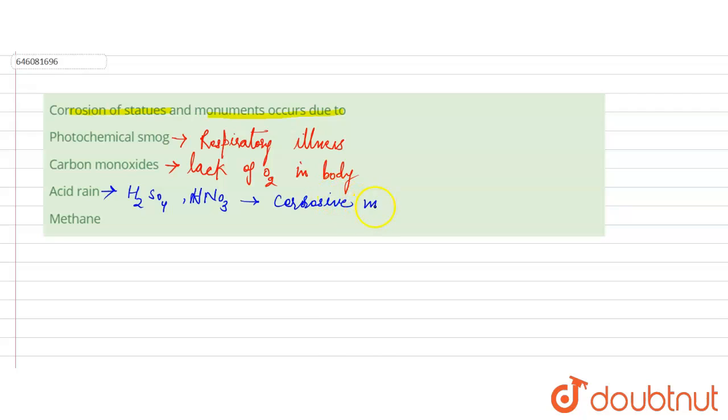These acids are corrosive in nature, which actually corrode building materials. They show their action on building materials.